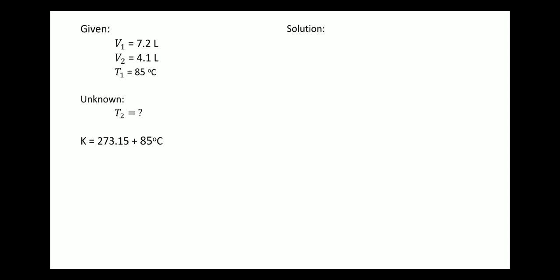First, convert T1 of 85 degrees Celsius to Kelvin: 273.15 plus 85 is 358.15 Kelvin. Now, substituting values into the formula: 7.2 liters over 358.15 Kelvin is equal to 4.1 liters over T2.